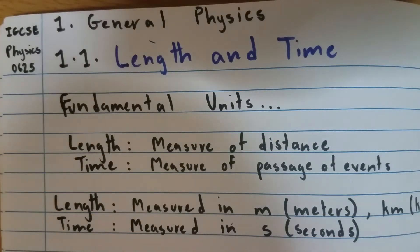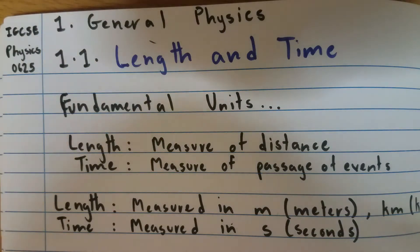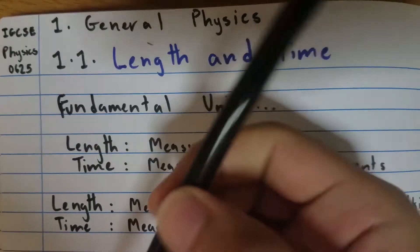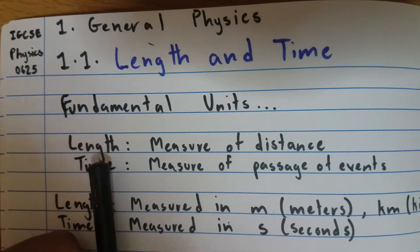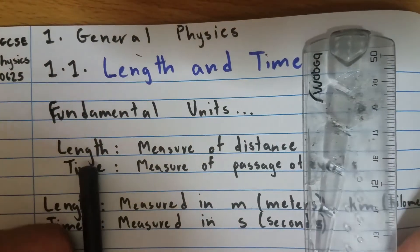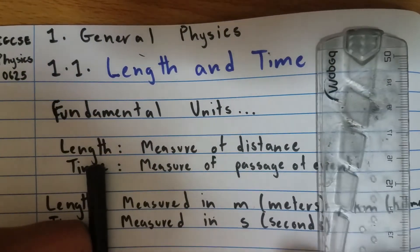So what are length and time? I think we all know that but let's dive in deeper into what they actually are. Length is a measurement of distance. It's how we measure distances between objects, say this marker that I have and this ruler that I have here. So it's just a measure of the distance, that's what we call length.